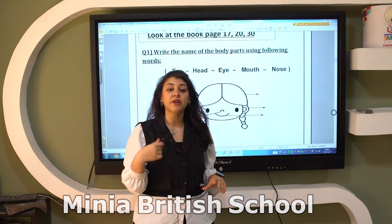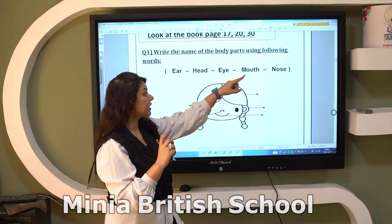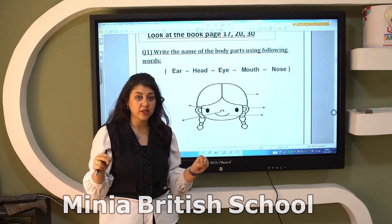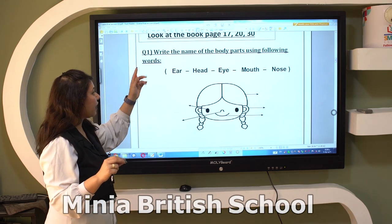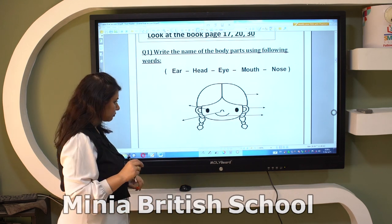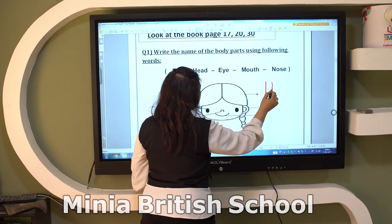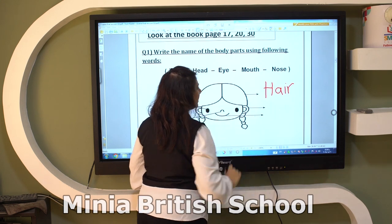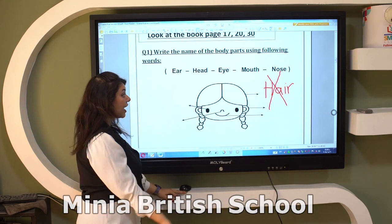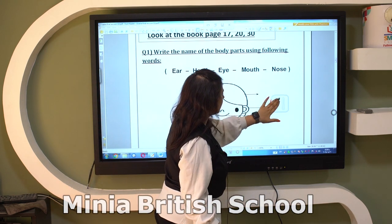After that, Grade 1, we will revise our body parts. Don't forget to take the words from the keywords provided. If you write 'here' for the ear, it will be wrong because the keyword is 'ear.' Look at the keywords: we have ear, head, eye, mouth, nose. So this part is 'head.'